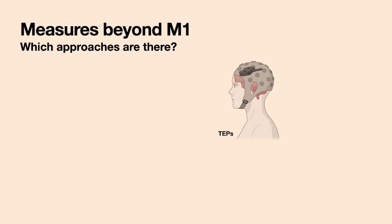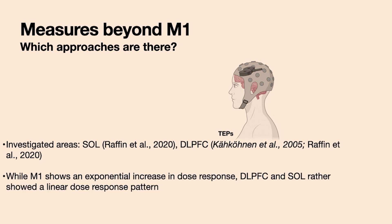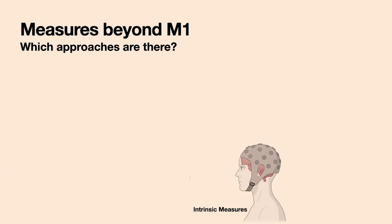As we heard from Elisa, we could look at TMS-evoked potentials. Some studies looked into the visual cortex and DLPFC. Comparing to M1 excitability, where a more exponential increase was found as a factor of stimulation dose, in DLPFC and occipital cortex there was rather a linear dose-response pattern. This confirms that electrophysiological correlates of cortical excitability are distinct between M1 and other cortical areas.